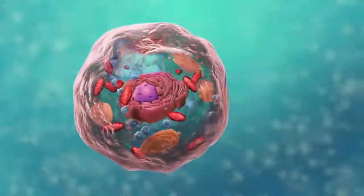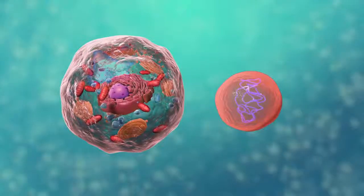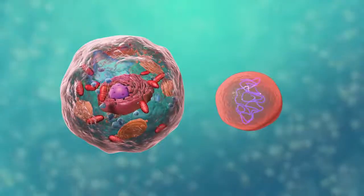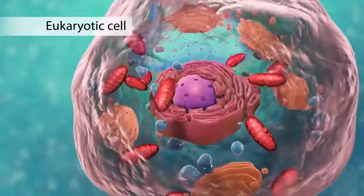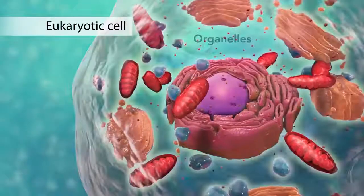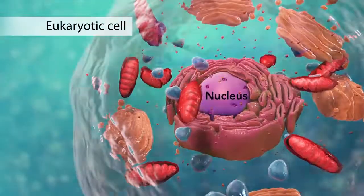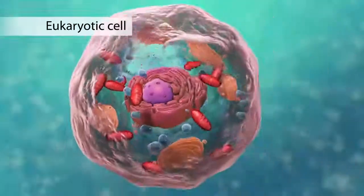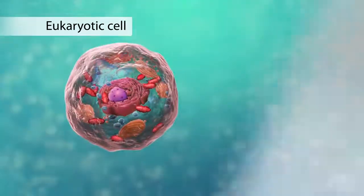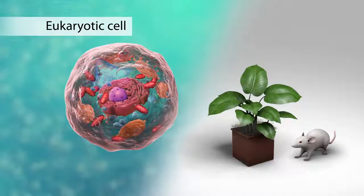There are two broad categories of cells. The first category is eukaryotic cells. They have organelles, which include the nucleus and other special parts. Eukaryotic cells are more advanced, complex cells such as those found in plants and animals.